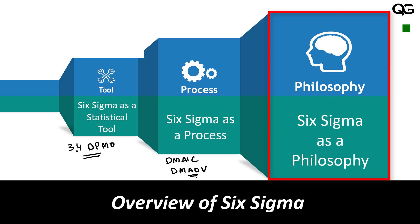The highest level of implementing Six Sigma is using it as a philosophy. Here, organizations understand that anything less than ideal has an opportunity to improve, so wherever there is a possibility, you improve. If you implement Six Sigma with that mindset, you are implementing it as a philosophy — improving anything and everything that is not ideal. General Electric implemented Six Sigma as a philosophy.